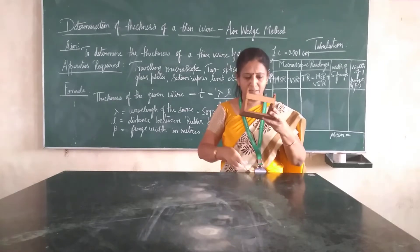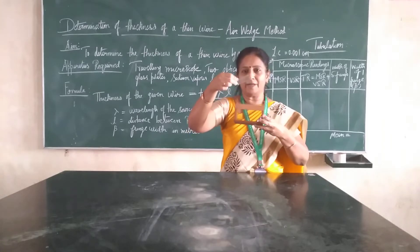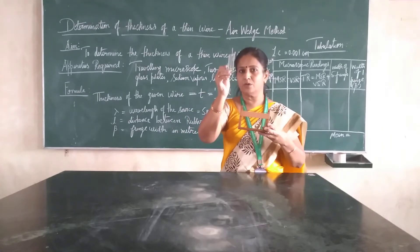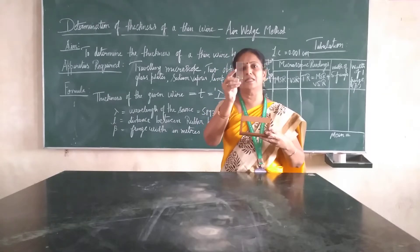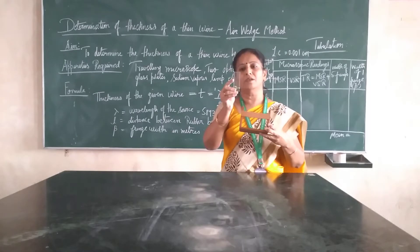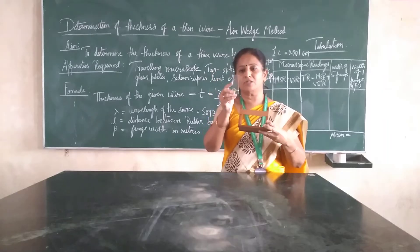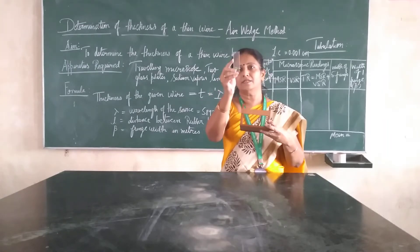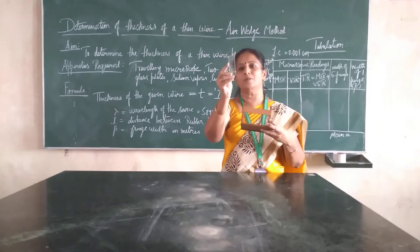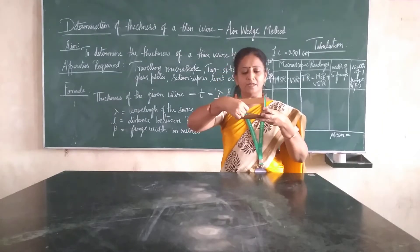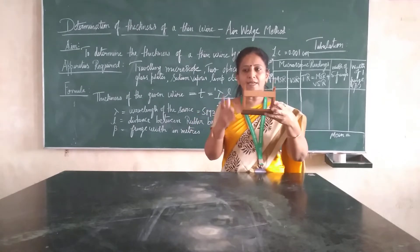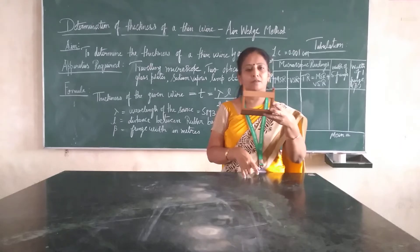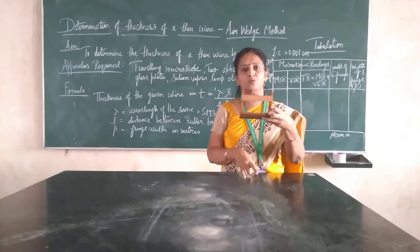We are placing the two plane glass plates tied at one end with a rubber band, and the other end has a very thin wire. It can be a hair or a very thin wire — anything that will be used for calculating using the air-wedge method. It is held at a distance from the rubber band. Other than this, we have a traveling microscope and sodium vapor lamp which is used as a source.